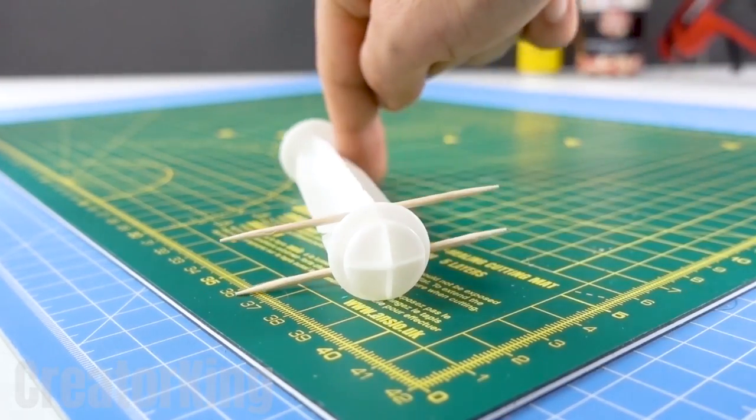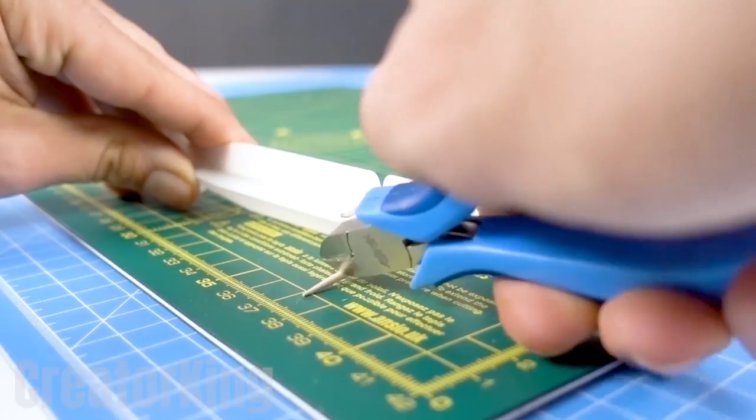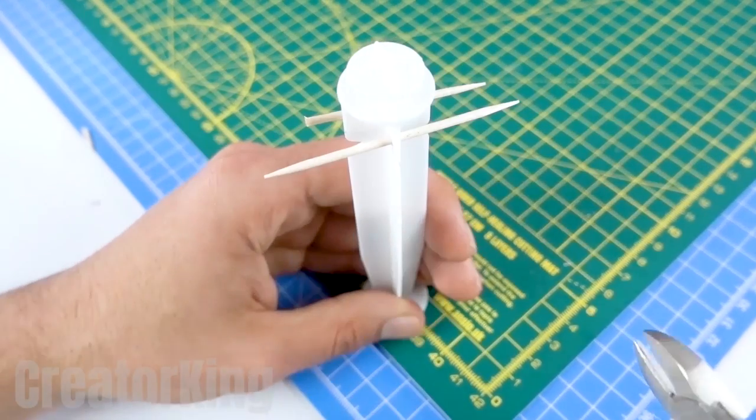With pliers, remove the excess that protrudes from the support. They should be the same size as its width.